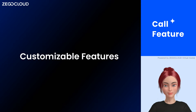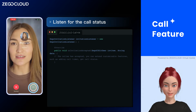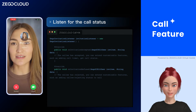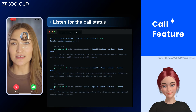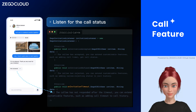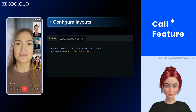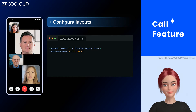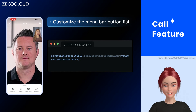Our call kit includes customizable features to extend and tailor your experience. It supports listening to call status and customizing layouts. Furthermore, call kit allows configuring the bottom menu bar, which adds business-related custom buttons.